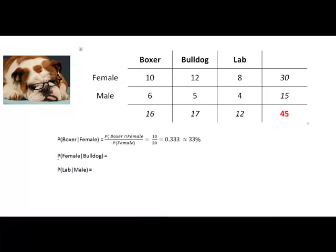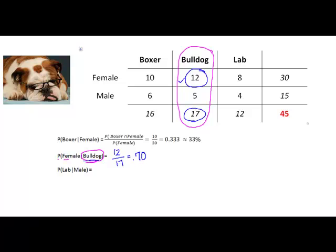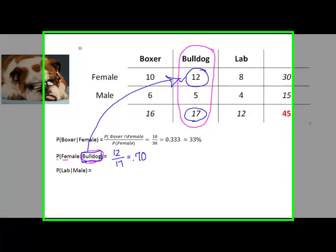Now I'm going to look at the probability of a female given that it's a bulldog. Bulldog is going to be what reduces my sample space, so I'm only dealing with these bulldogs as the sample from which I'm drawing. I've already picked a dog and it's a bulldog, so now I want to know what's the probability that it's a female. The probability that it's a female are these 12, out of the 17 bulldogs I had from which to select — 12 over 17, which is approximately 70%. Whatever you're given is the only part of all these dogs from which we want to choose.